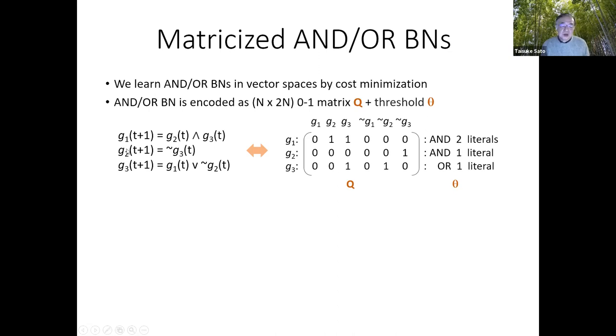Likewise, G2, the next of G2 is a negation of G3. So we put one here, correspond to negative literal G3. Also, theta two is set to one because there is only one negative literal here.